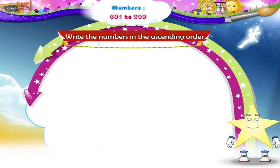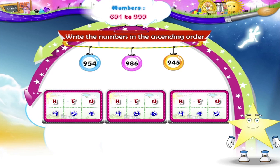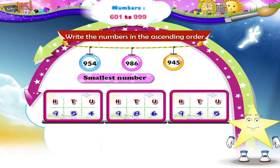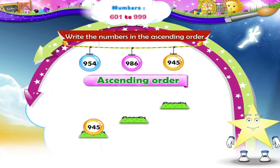The second set of numbers is 954, 986, and 945. All the numbers have 9 in the hundredths place. So we shall compare the digits in the tenths place. 8 is the biggest digit, so 986 is the biggest. Which is the smallest number, Sari? Since 4 is the smallest digit, 945 is the smallest number. So the ascending order is 945, 954, and 986.